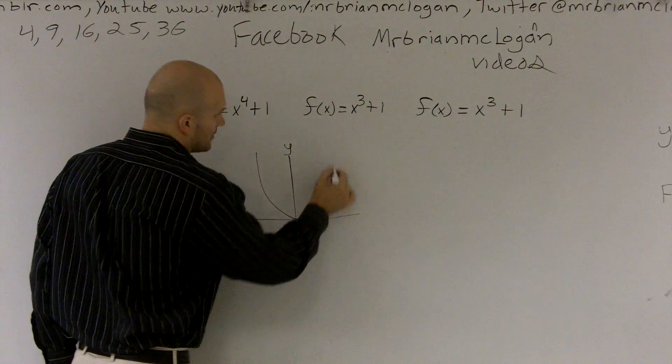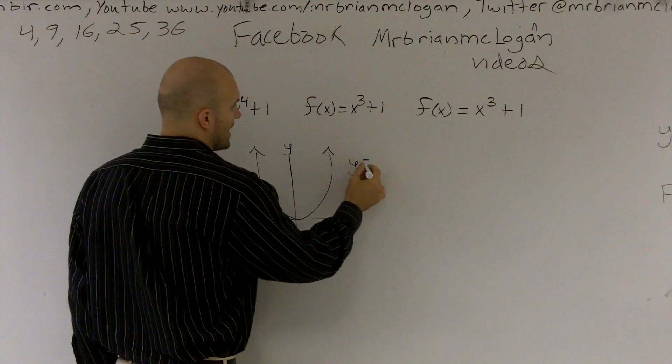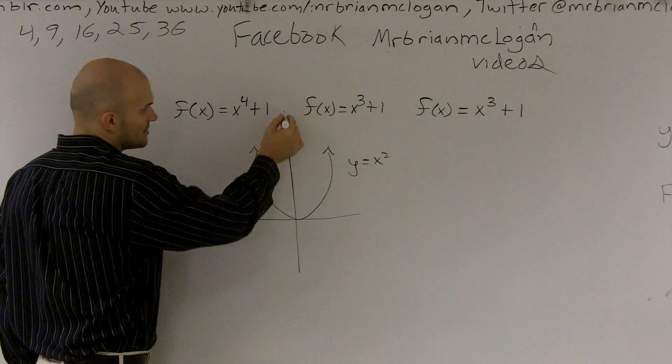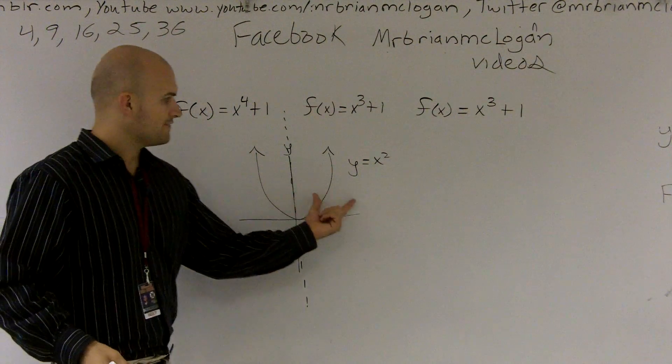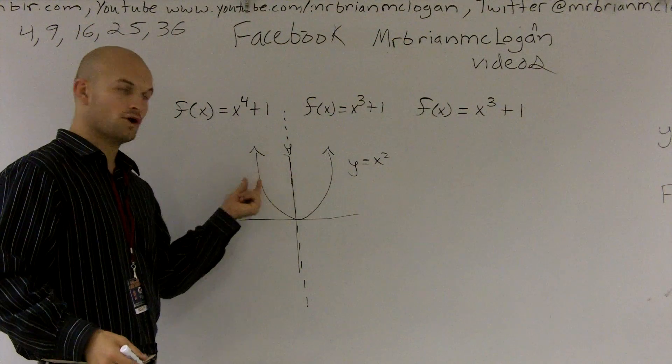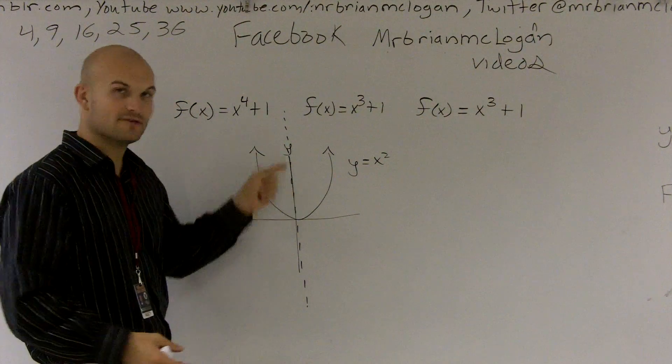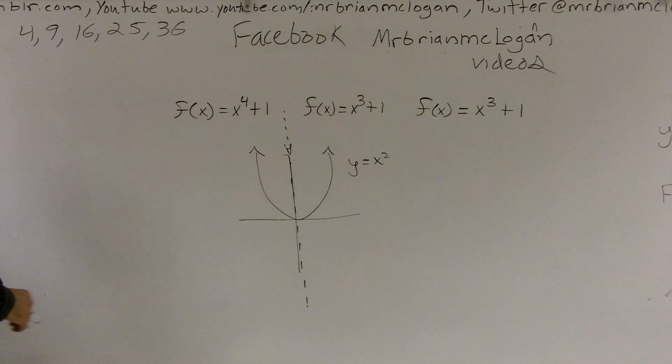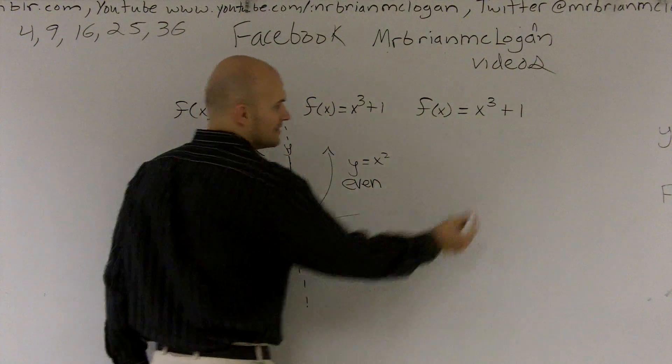A general quadratic equation, y equals x squared, that is an even function because down this line of symmetry, if you were to fold this over to my left, to the left side, you'd see it be exactly the same. So it is symmetrical about the y-axis, therefore it's even.